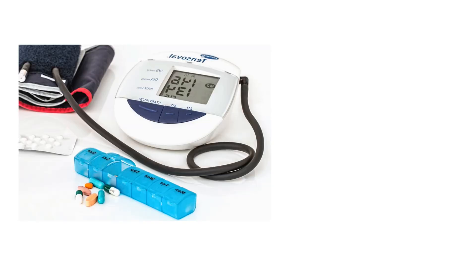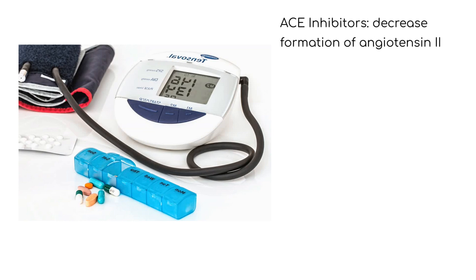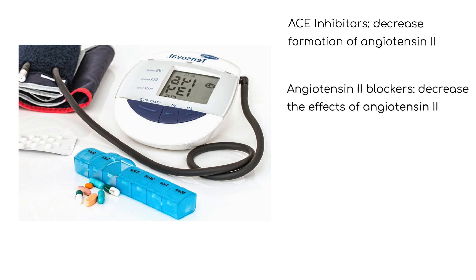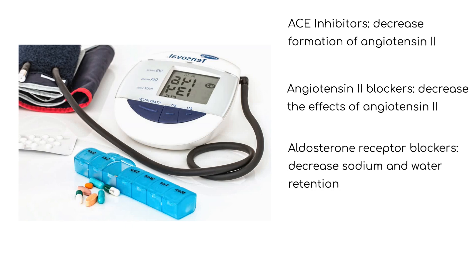Medications for treating hypertension work to alter this pathway. For example, ACE inhibitors decrease the formation of angiotensin II. Angiotensin II blockers decrease the effects of angiotensin II, and aldosterone receptor blockers decrease the sodium and water retention effects of aldosterone.